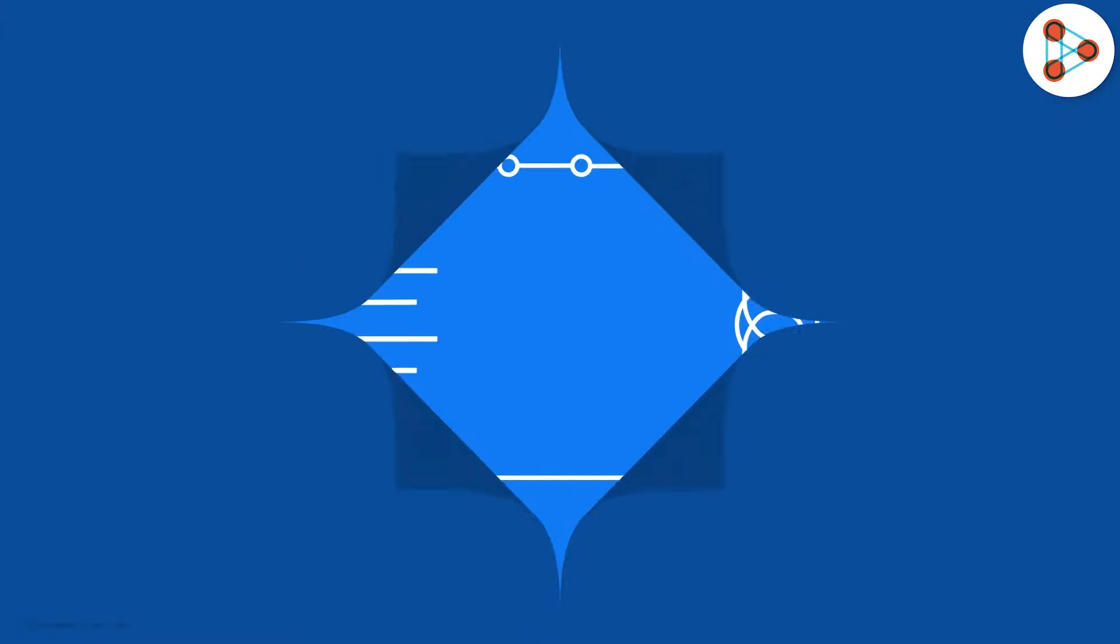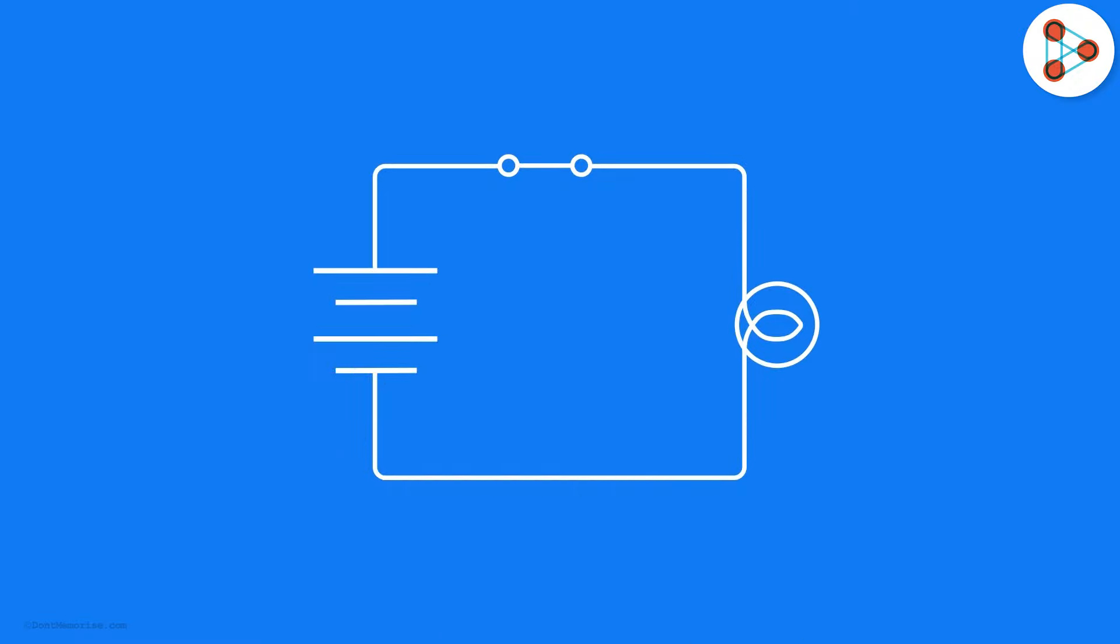One last point about electricity. In an electric circuit, the direction of electricity is taken as opposite to the direction of flow of electrons. If the electrons are flowing in this direction, then the direction of flow of electricity will be in the other direction.